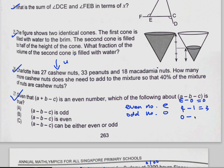Odd minus even — so let's say you have five minus two, you will get three, which is odd. Right, yeah. So the next one: odd minus odd will give you...